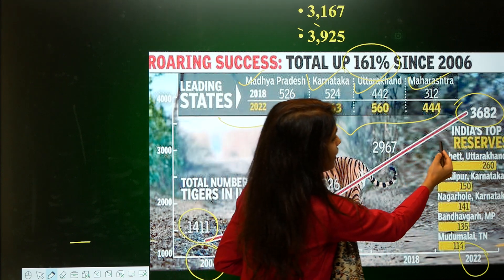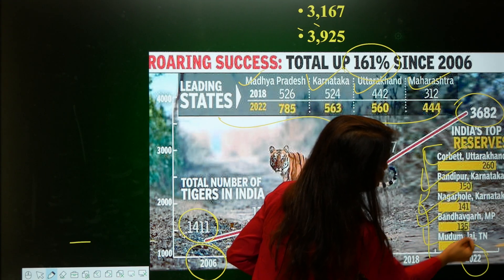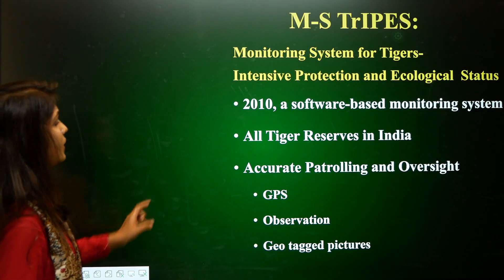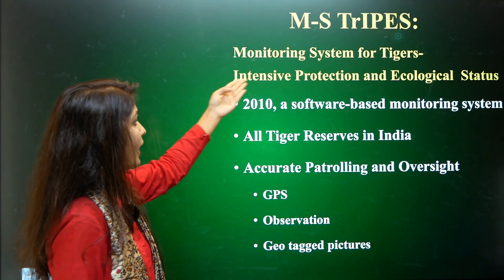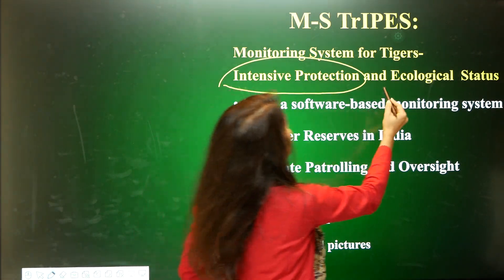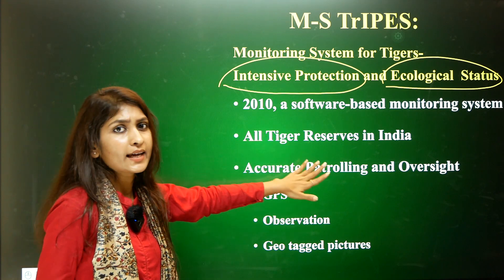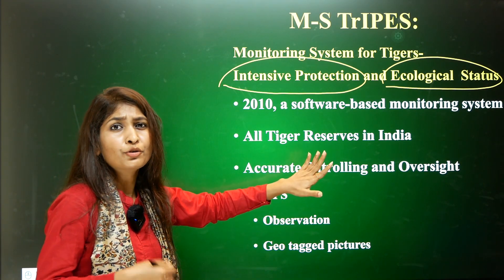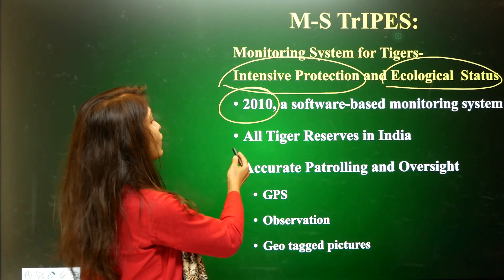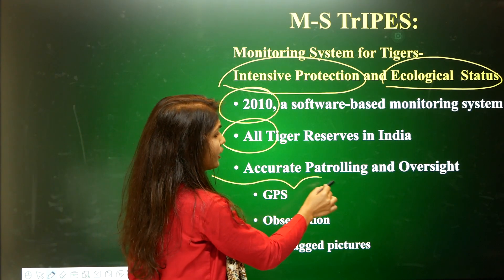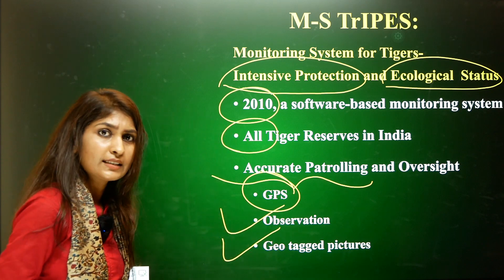The monitoring system used is M-STRIPES — Monitoring System for Tigers: Intensive Protection and Ecological Status. It is followed by all tiger reserves in India and has been a contributor to the 161% increase in tiger population. Started in 2010, it involves GPS and other techniques, observation recording, and geotagged pictures of tigers wherever sighted — making it an almost accurate patrolling method.